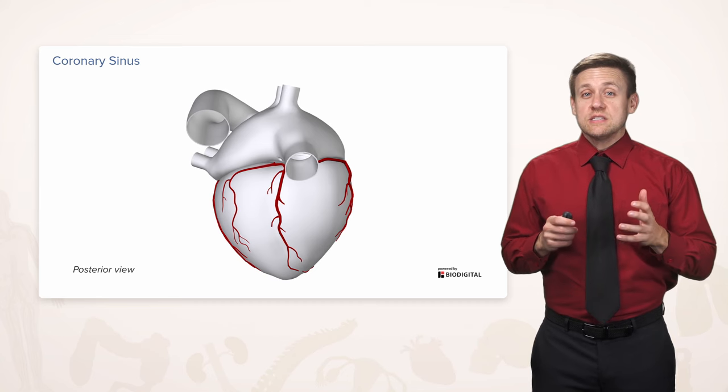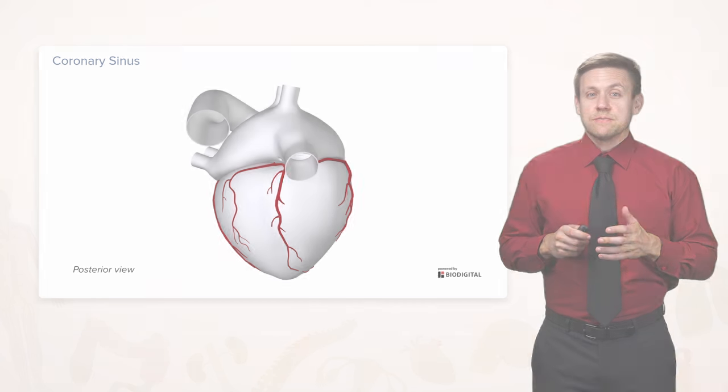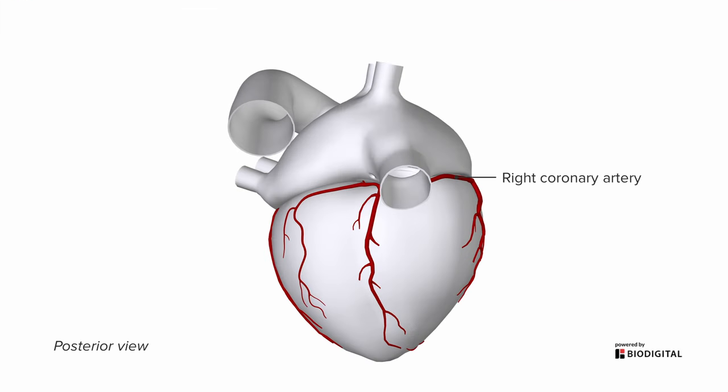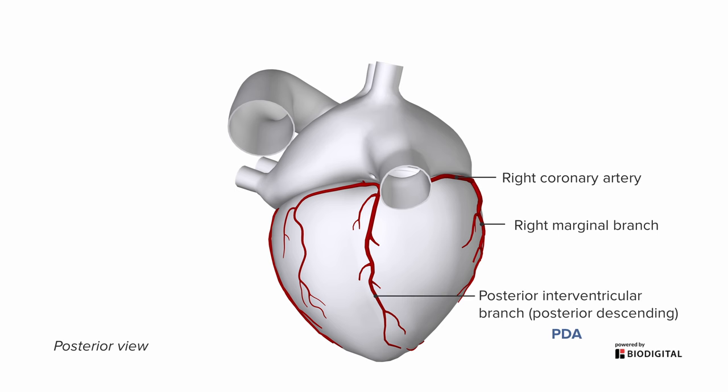Let's swing around to the posterior surface, where we can see the right coronary artery continuing between the groove of the atrium and the ventricle, giving off branches along the way — such as the right marginal branch here at the edge of the picture — and then supplying the posterior interventricular branch, or the posterior descending artery, also known as the PDA.